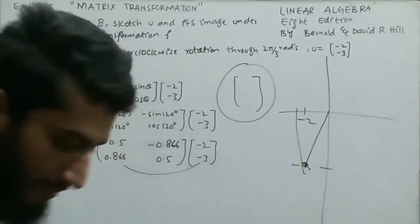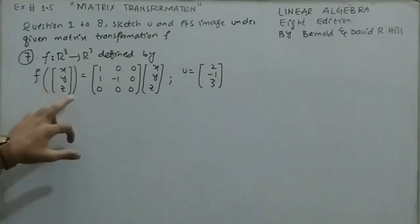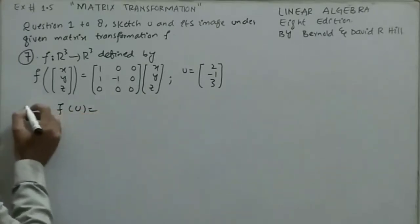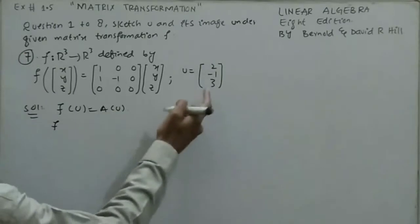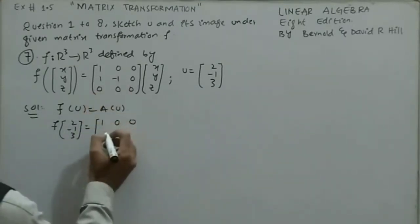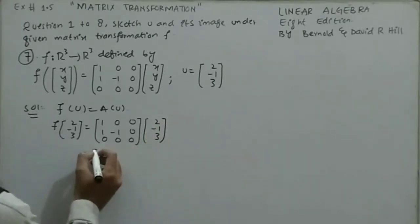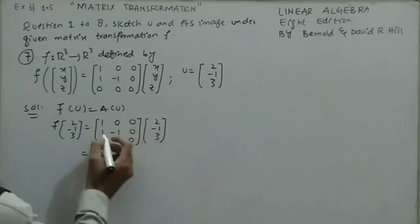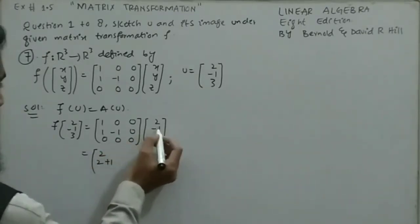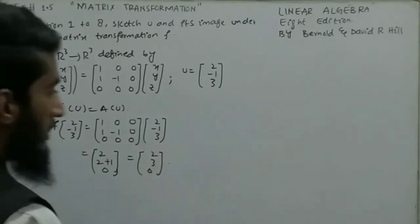Now solving question 7. It involves a function from R³ to R³, defined by f(x,y,z) = [[1,0,0],[1,-1,0],[0,0,0]] times (x,y,z), with u = (2,-1,3). Using f(u) = A·u: A is [[1,0,0],[1,-1,0],[0,0,0]] multiplied by (2,-1,3). Computing: row 1 gives 2, row 2 gives 2+1=3, row 3 gives 0. So the image is (2,3,0).